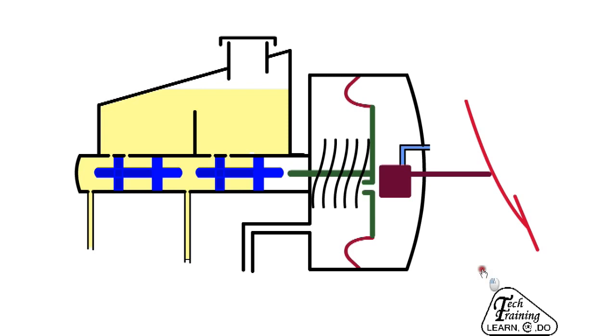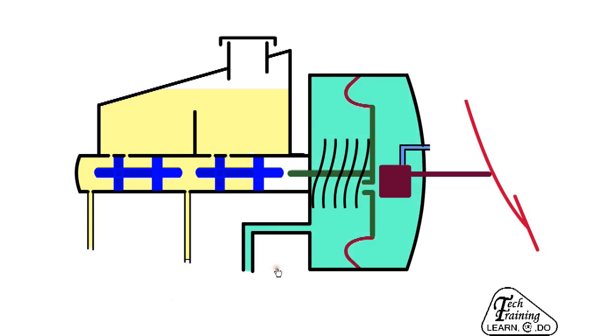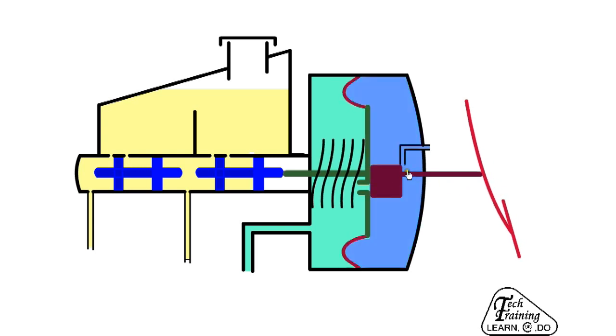As disc brakes do not have a wedging action similar to drum brakes, considerable effort is required to operate them. Usually a car will have a braking power assist system. This uses vacuum from the air intake system. When the car is started, there is vacuum on both sides of the diaphragm. When the pedal is pressed, it first closes the valve to the vacuum side and then opens the valve to atmosphere.